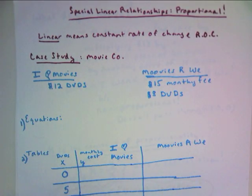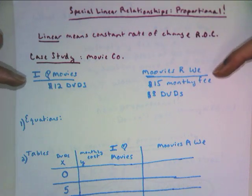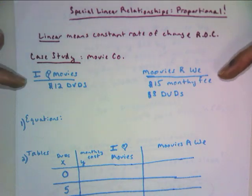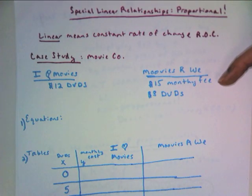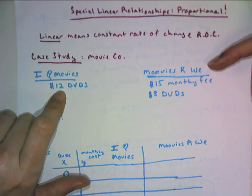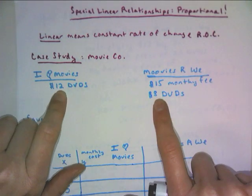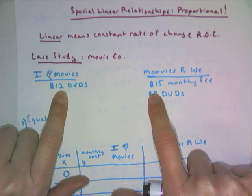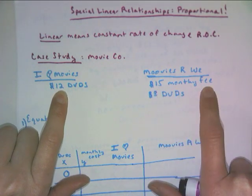To look at the difference between a proportional and a non-proportional relationship, we'll study this first case study. So we're going to study some DVD rental places, but instead of renting them, we're actually going to buy them here. You have I Heart Movies that is charging $12 per DVD, and then you have Movies Are We that have $8 per DVD. So to compensate for the lower price, they're going to say that you have a $15 monthly fee.